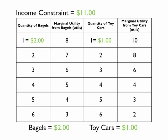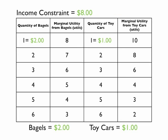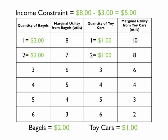If you purchase the first quantity of each good, a total of $3 will be spent and you will have $8 left to spend. If you purchase the second quantity of each good, an additional $3 will be spent and you have $5 left to spend.